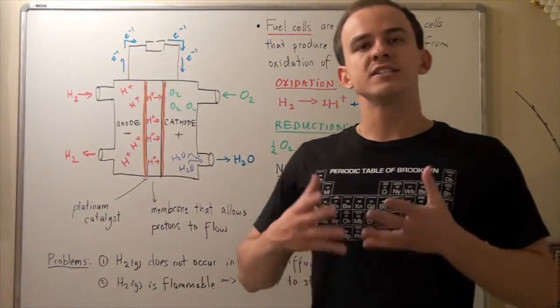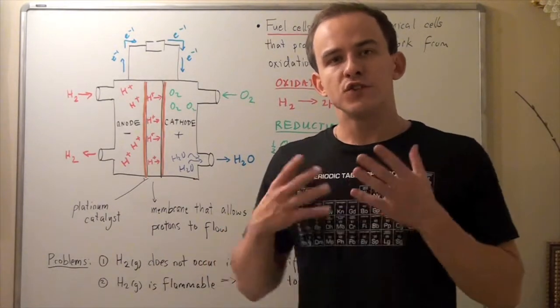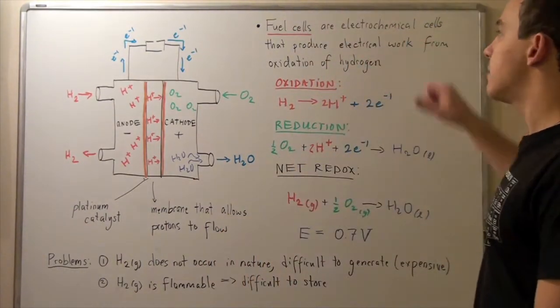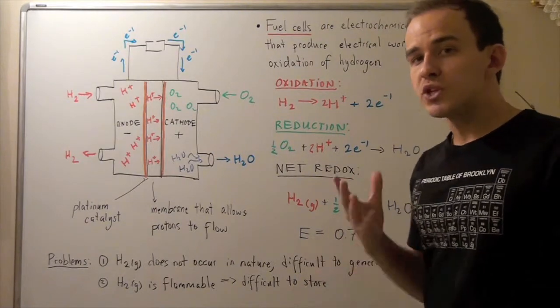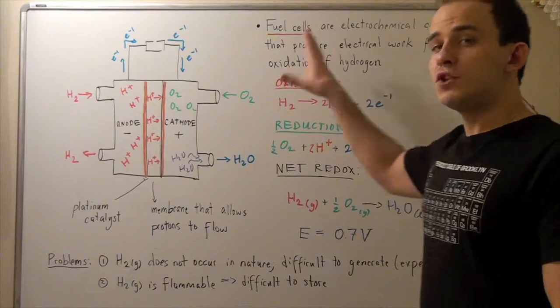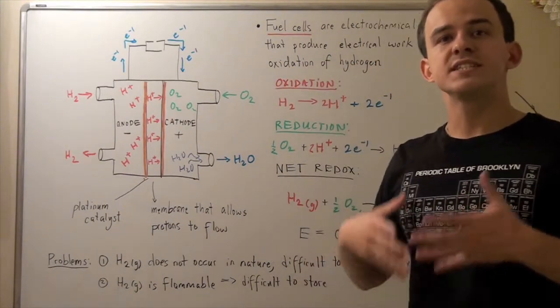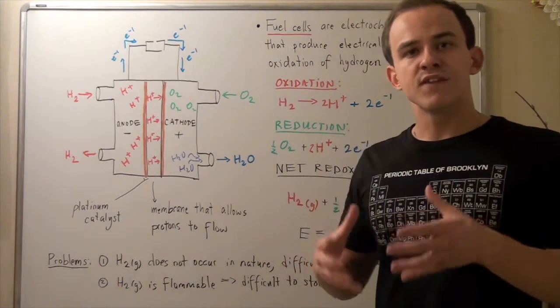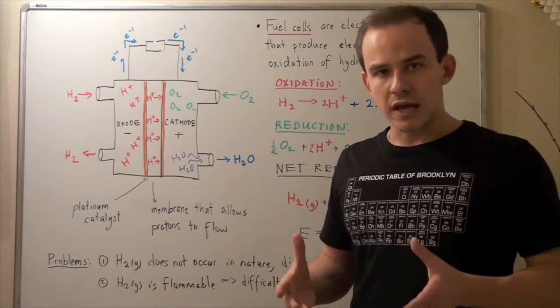In this lecture, we're going to look at something called fuel cells. Fuel cells are electrochemical cells that produce electrical work from oxidation of hydrogen. Fuel cells are very commonly used on spacecrafts. They provide electricity to the various appliances found on spacecrafts.